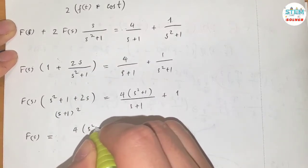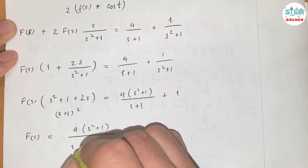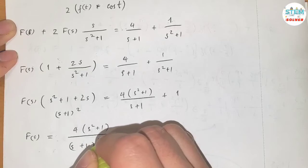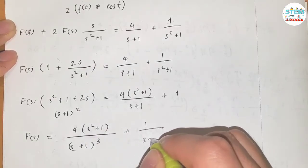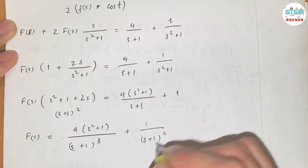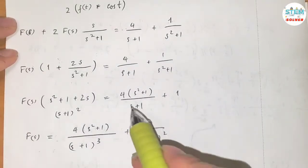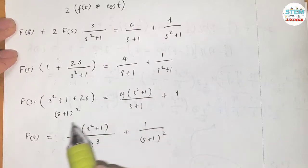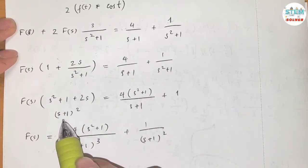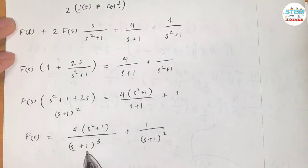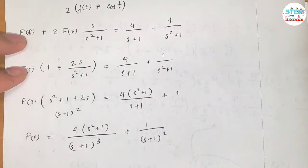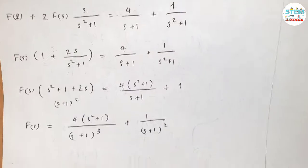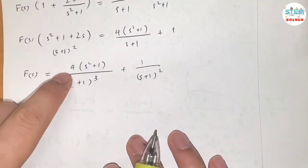After dividing, I have 4 times (s² plus 1) over (s plus 1) cubed plus 1 over (s plus 1) squared — since (s plus 1) times (s plus 1) squared gives (s plus 1) cubed.